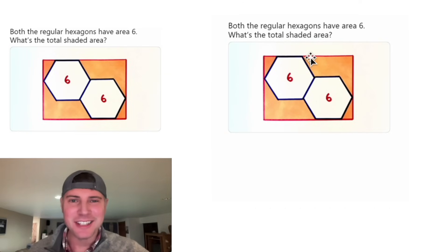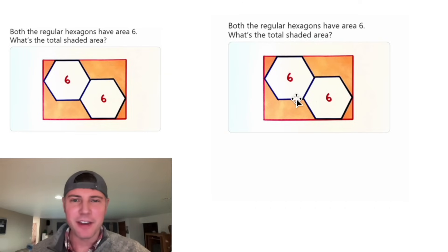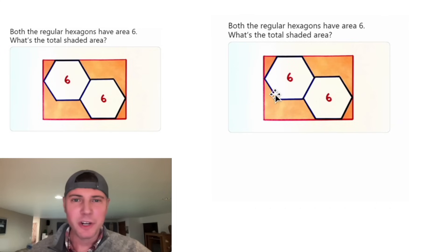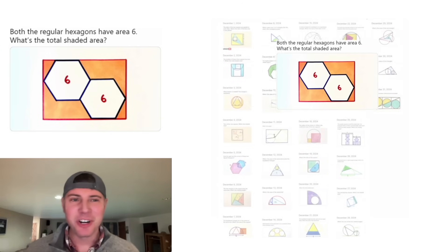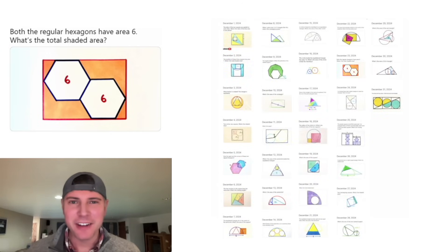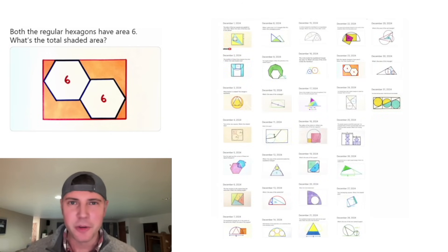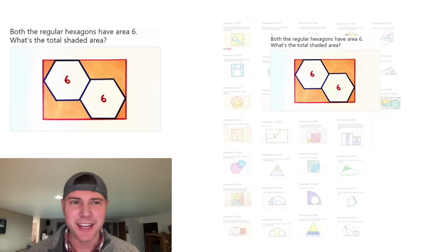Hey guys, this looks like a fun one. It says both the regular hexagons have area 6, and it wants to know what is the total shaded area. This is day 23 of our Advent calendar. For the month of December, we're going to solve 31 Katrina Ag puzzles in 31 days.